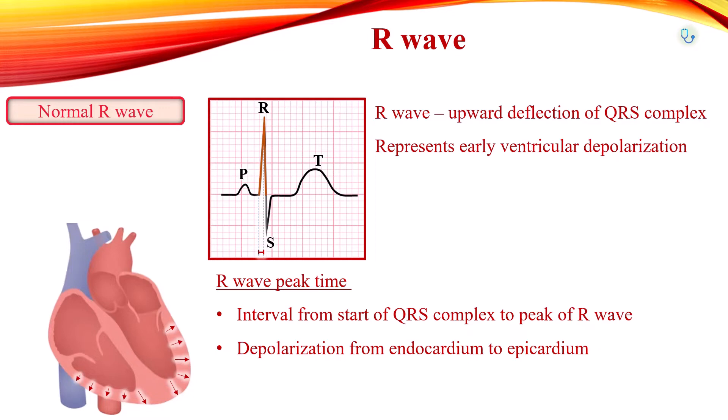Normally, R-wave peak time should be less than 35 ms in leads V1 and V2, and less than 45 ms in leads V5 and V6. In ventricular hypertrophy and conduction disturbances, R-wave peak time is prolonged.